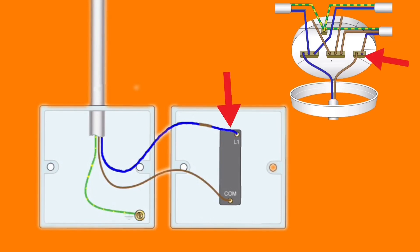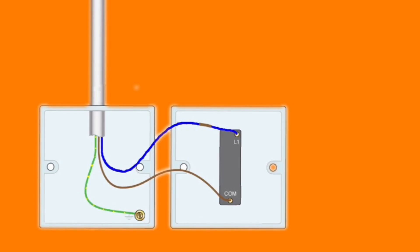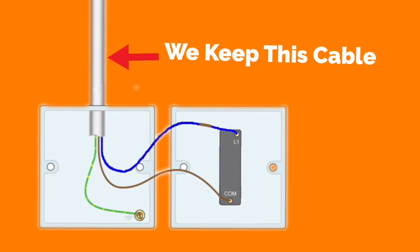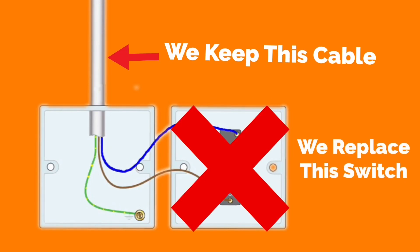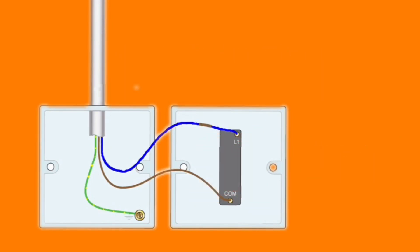Operating the switch puts a switching line conductor through to L1 and turns on the lamp. The switch drop could be in twin brown - in which case both conductors are already identified and no sleeving is required - or in old colors in red and black with the black identified with red sleeving, or in twin red. Whichever of the four variants it is, in this case twin and CPC, the cable remains in place. However, the one-way switch will need to be removed and replaced with a two-way switch at the original position, and a new two-way switch added at the new position.